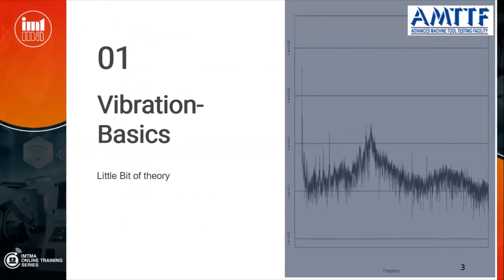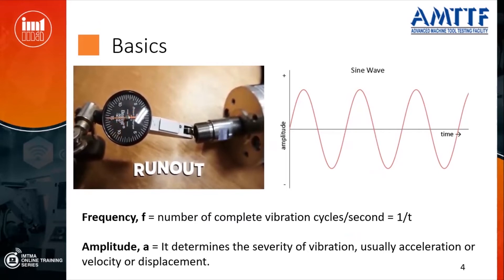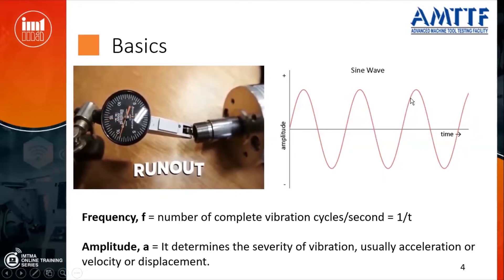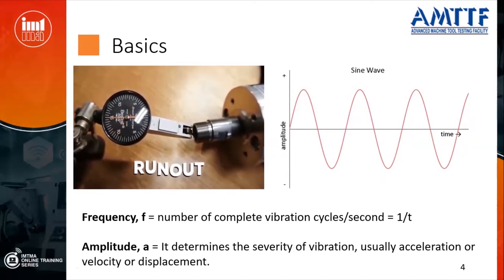What is vibration? You may have measured runout on machines, whether as a user or manufacturer. The basic thing you check is runout, and you will observe the dial reading going positive to negative in a sinusoidal way. This sinusoidal deflection — the number of complete cycles in one second — is what we call frequency. For example, if the reading goes between minus 10 microns to plus 10 microns, the 20 microns total is the amplitude.